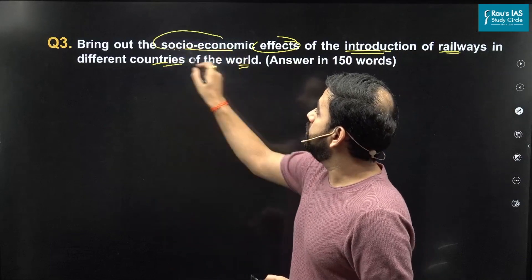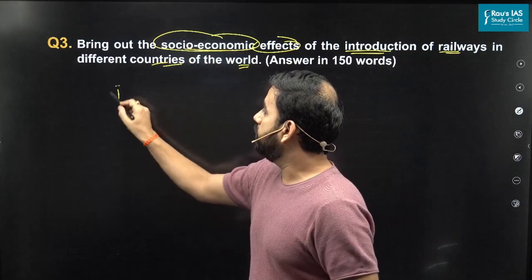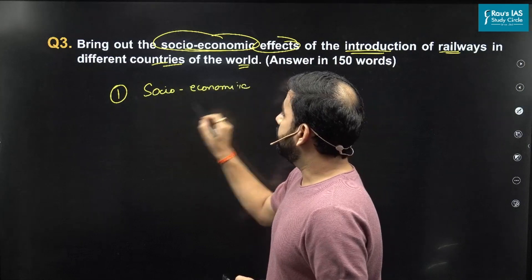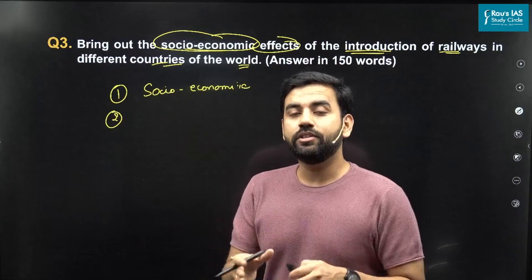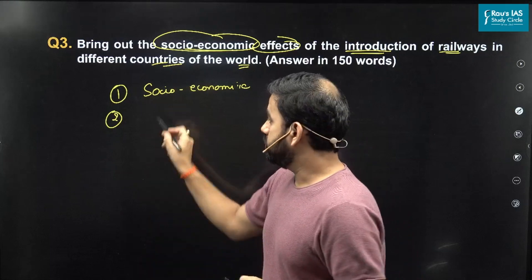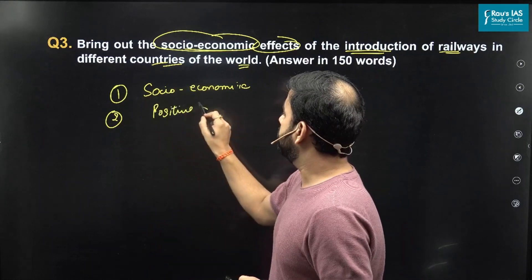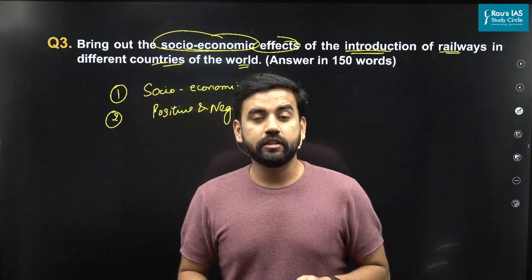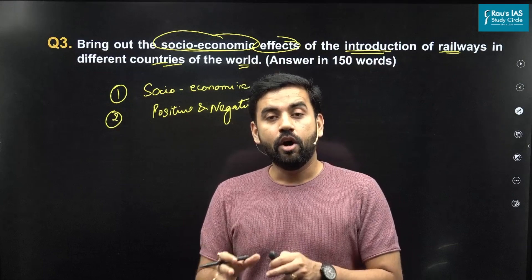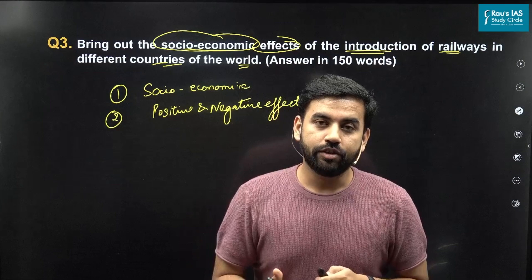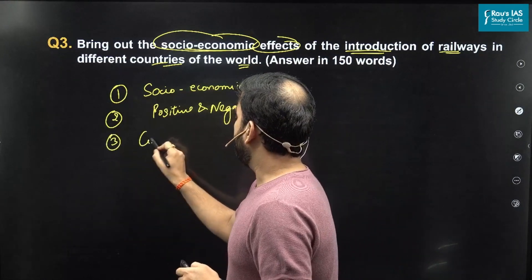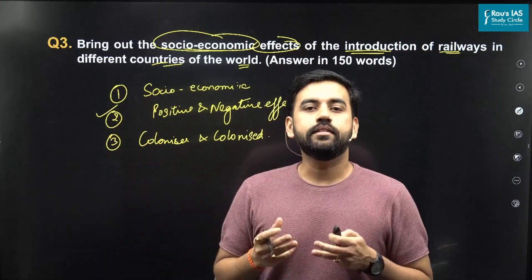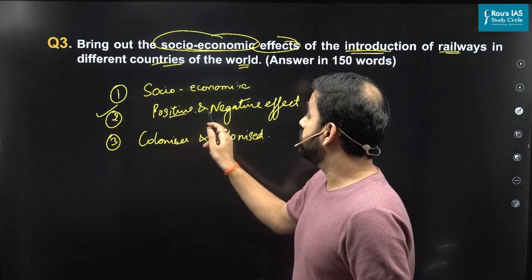This question can easily be answered using three different methods. The first is to divide your answer into social and economic separately. The second is to answer based on the negative and positive effects of railways on these important countries. The third way is to answer from the perspective of how railways affected the developed or colonizer country versus the colonized country. In order to make this answer easy and comprehensive, let's discuss from the perspective of positive and negative effects.